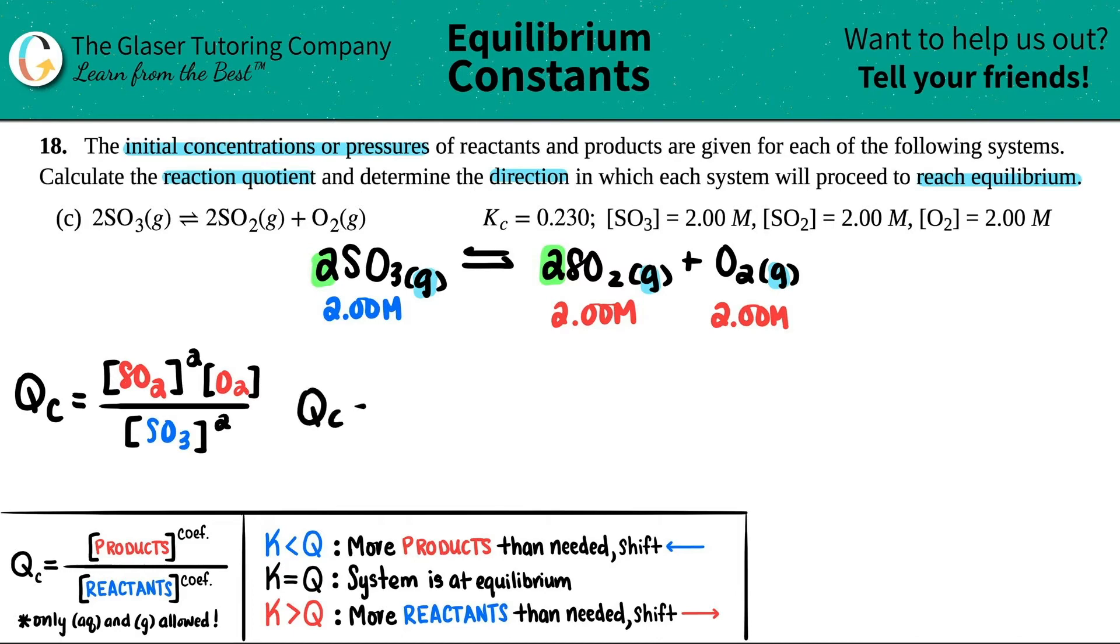Now, let's plug in those numbers. QC equals, let's see. Let's start from the top. The SO2, well, they were all 2s. So, 2.00, that's being squared, times 2.00, that's the O2, and then divided by 2.00, and that's also squared.